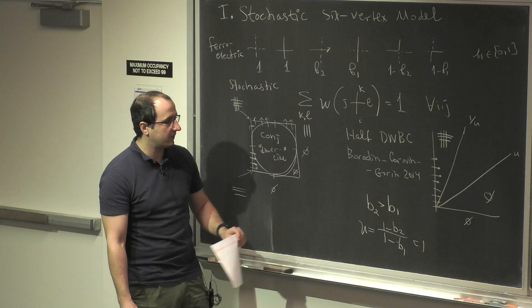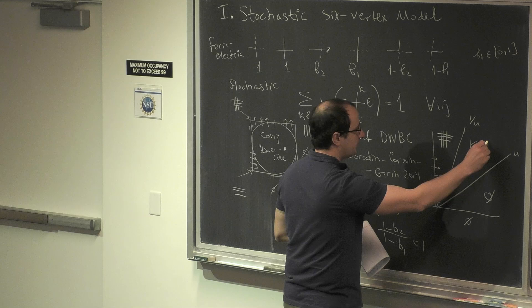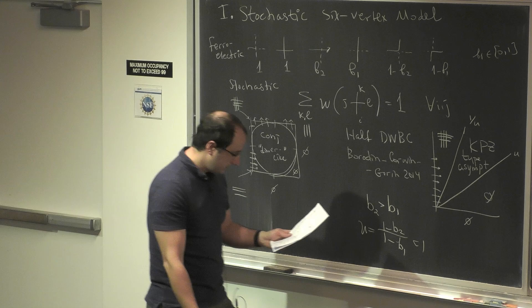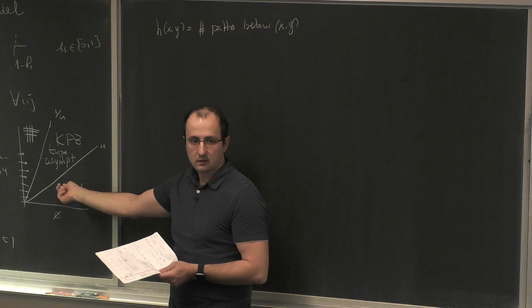Does it have Gaussian free field behavior? No, it has KPZ behavior. What you see is KPZ-type asymptotics. Let me formulate the theorem. I define height function h(x, y) to be the number of paths below (x, y) in the plane.